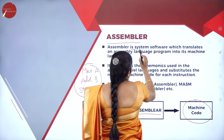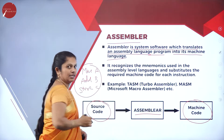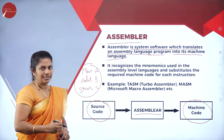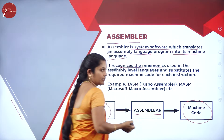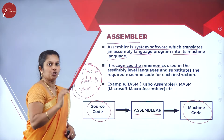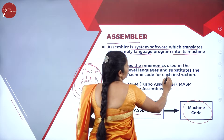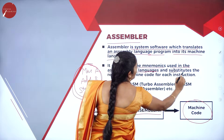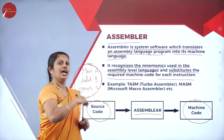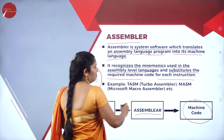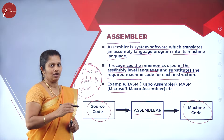Assembler is a system software which translates an assembly language program into machine language. It takes data written in assembly format and converts it into machine code. It recognizes the mnemonics — where instructions are written using symbols and words — and substitutes the required machine code for each instruction. For example, TurboAssembler and Microsoft MacroAssembler are examples of assemblers.